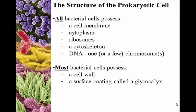They're going to list out here the general structure of bacteria. This is by no means something you need to memorize, but familiarize yourself with it. All bacteria will have a cell membrane, cytoplasm, ribosomes, a cytoskeleton, and DNA that comes in one or a few chromosomes. The reality is all living cells will possess pretty much these things as well. Most bacteria will also have a cell wall and a surface coating called a glycocalyx. We're going to cover them later, one by one.